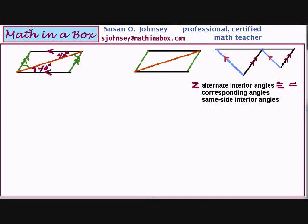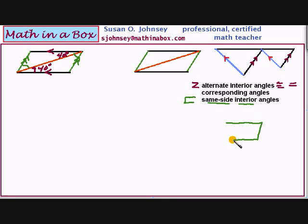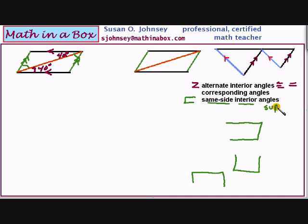Let's look at the diagram again, but this time we're going to consider same side interior angles. They will form a shape like that — you can have this or this. That's the shape you want to look for. Now, same side interior angles are not congruent — they are supplementary. The word supplementary means the angles will add to give 180 degrees.